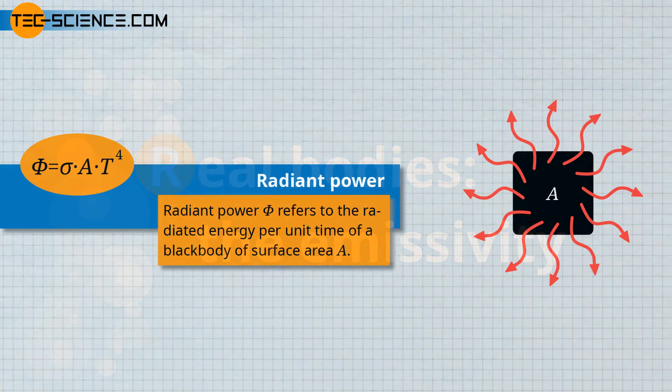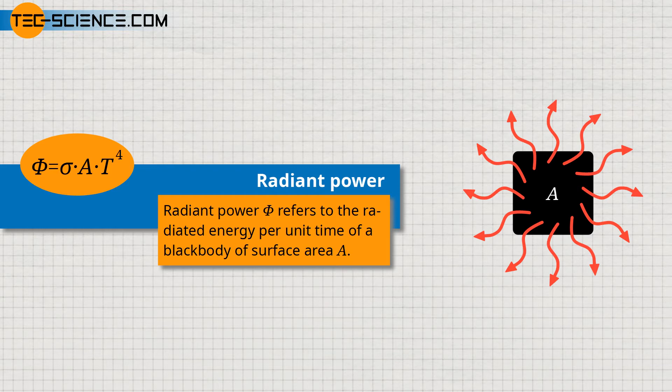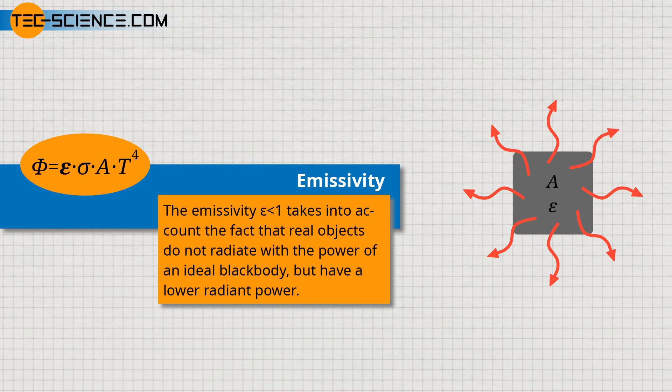Real bodies and emissivity: in practice, real objects do not radiate with the intensity of a blackbody but have a lower radiant power. This fact is taken into account by a unitless quantity called emissivity, which represents the radiant power of a real body compared to an ideal blackbody. For non-metallic surfaces, the emissivity is in many cases above 0.9, so these objects can be considered as blackbodies in a good approximation. This makes it relatively easy to determine the temperature of real objects with a thermal imaging camera or a pyrometer, since surface properties have a rather minor influence unless the surfaces are extremely reflective.